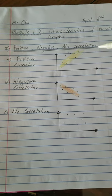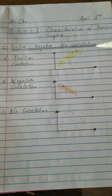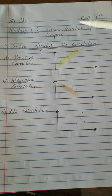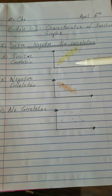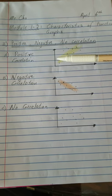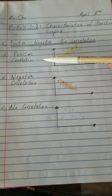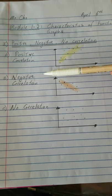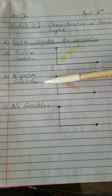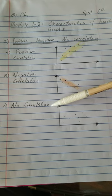The first thing we're going to look at is the trend of a graph. There are three different possibilities: number one, positive correlation; number two, negative correlation; and number three, null correlation.